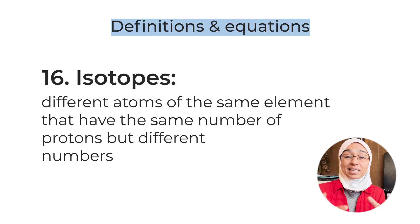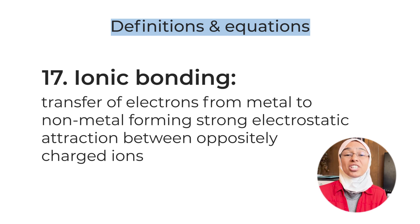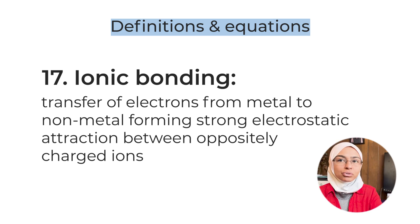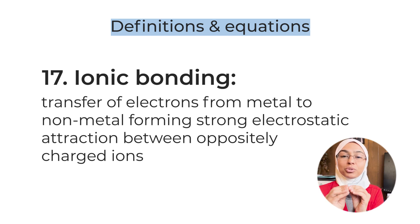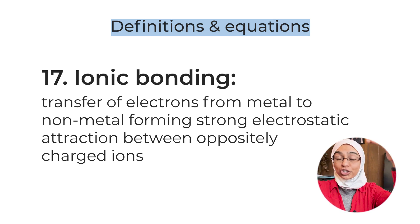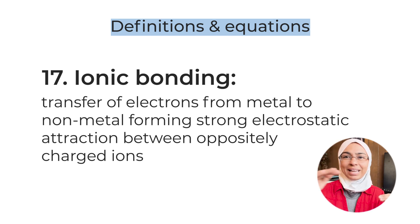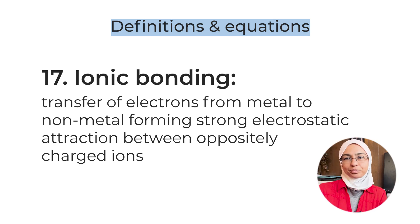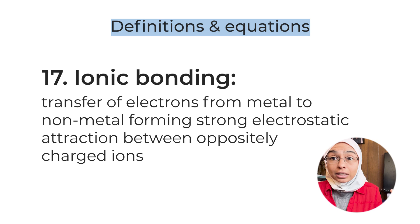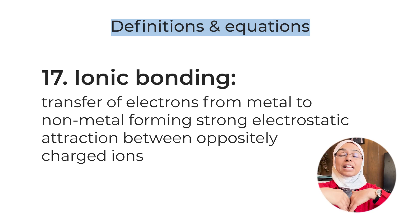Definition number seventeen: ionic bonding — the transfer (not sharing) of electrons from a metal to a non-metal, forming strong electrostatic attractive forces between oppositely charged ions, arranged in a giant lattice structure. That is why ionic compounds are not molecules. In multiple choice, examiners try to trick you with 'shared electrons' — there are no shared electrons in ionic compounds. The metal completely gives away its outermost electrons to the non-metal.